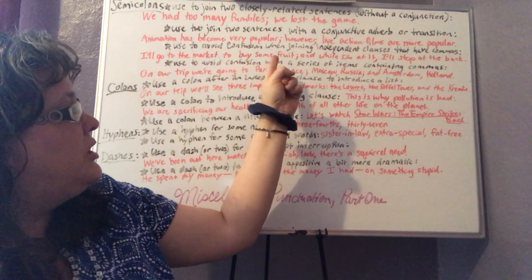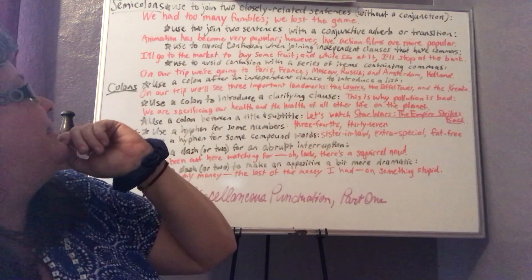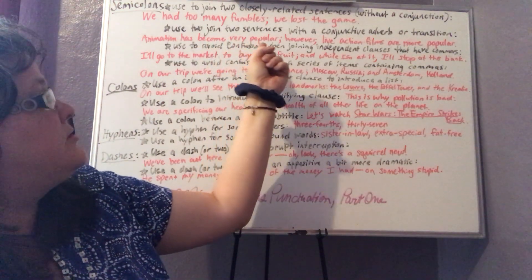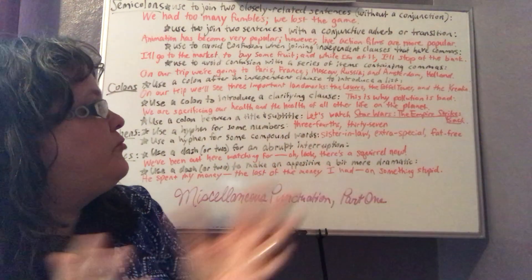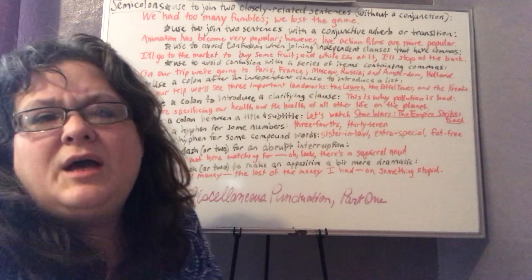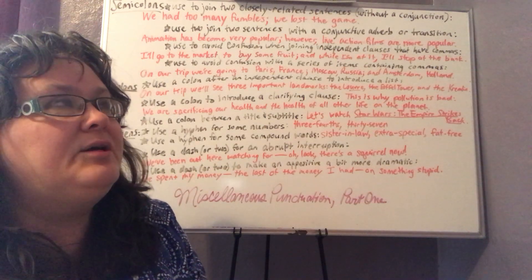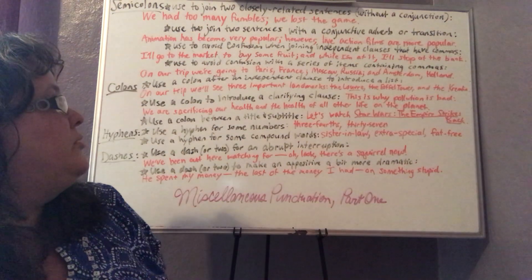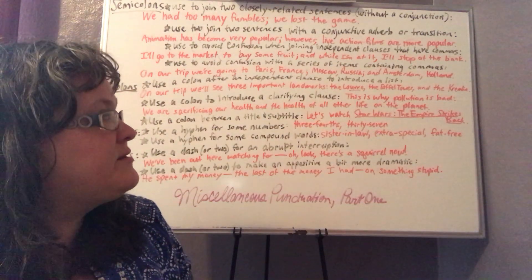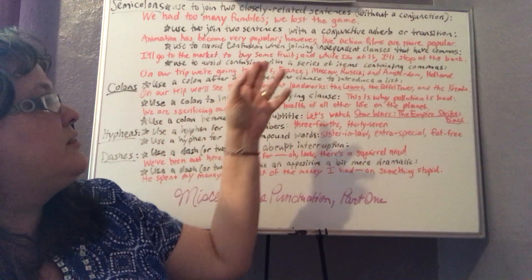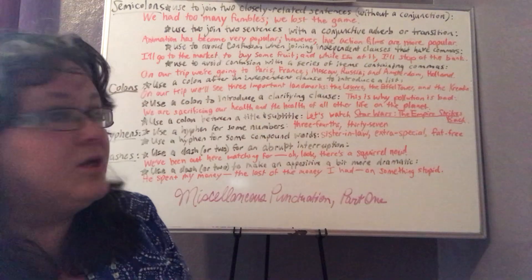'Animation has become very popular; however, live-action films are more popular.' So above that it says use to join two sentences with a conjunctive adverb or transition. So here we have the same kind of thing — two independent clauses — but now we have the word 'however,' which is a conjunctive adverb. A transition could be something like 'in other words' or 'as a final thought.' When you join two sentences together into one sentence with one of those kinds of transition words or phrases, you need to have a semicolon before the conjunctive adverb or transition, and then a comma after it.